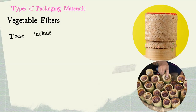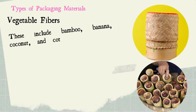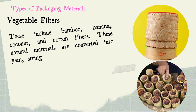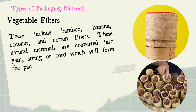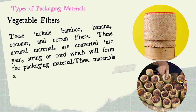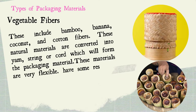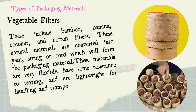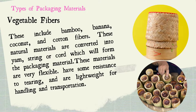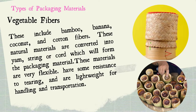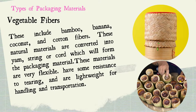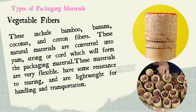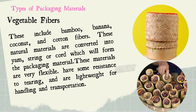Another packaging material is vegetable fibers. These include bamboo, banana, coconut, and cotton fibers. These natural materials are converted into yarn, string, or cord, which form the packaging material. These materials are very flexible, have some resistance to tearing, and are lightweight for handling and transportation. Being of vegetable origin, all of these materials are biodegradable and to some extent reusable. As with leaves, vegetable fibers do not provide protection to food with a long shelf life, since they offer no protection against moisture pickup, microorganisms, insects, or rodents.